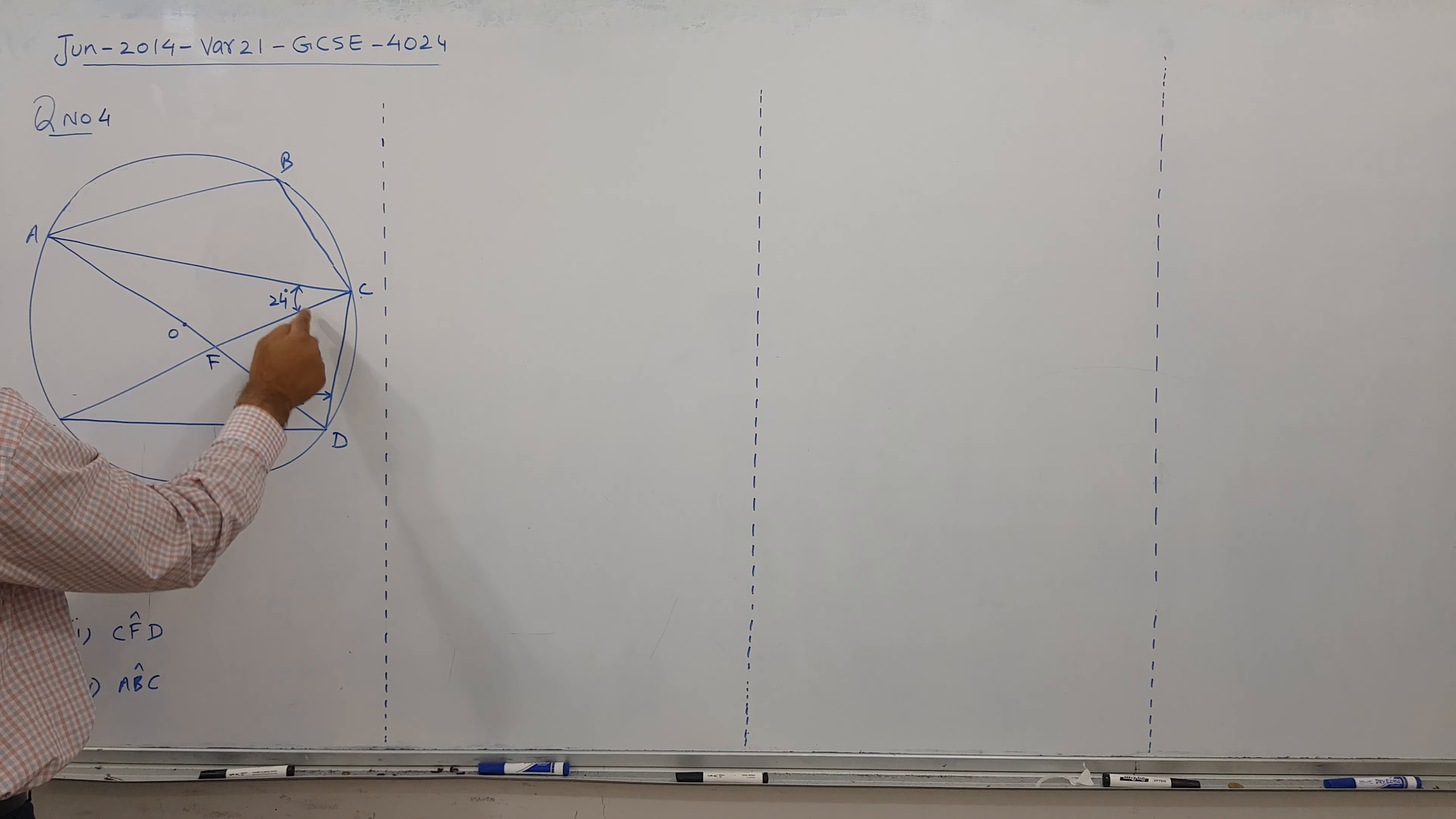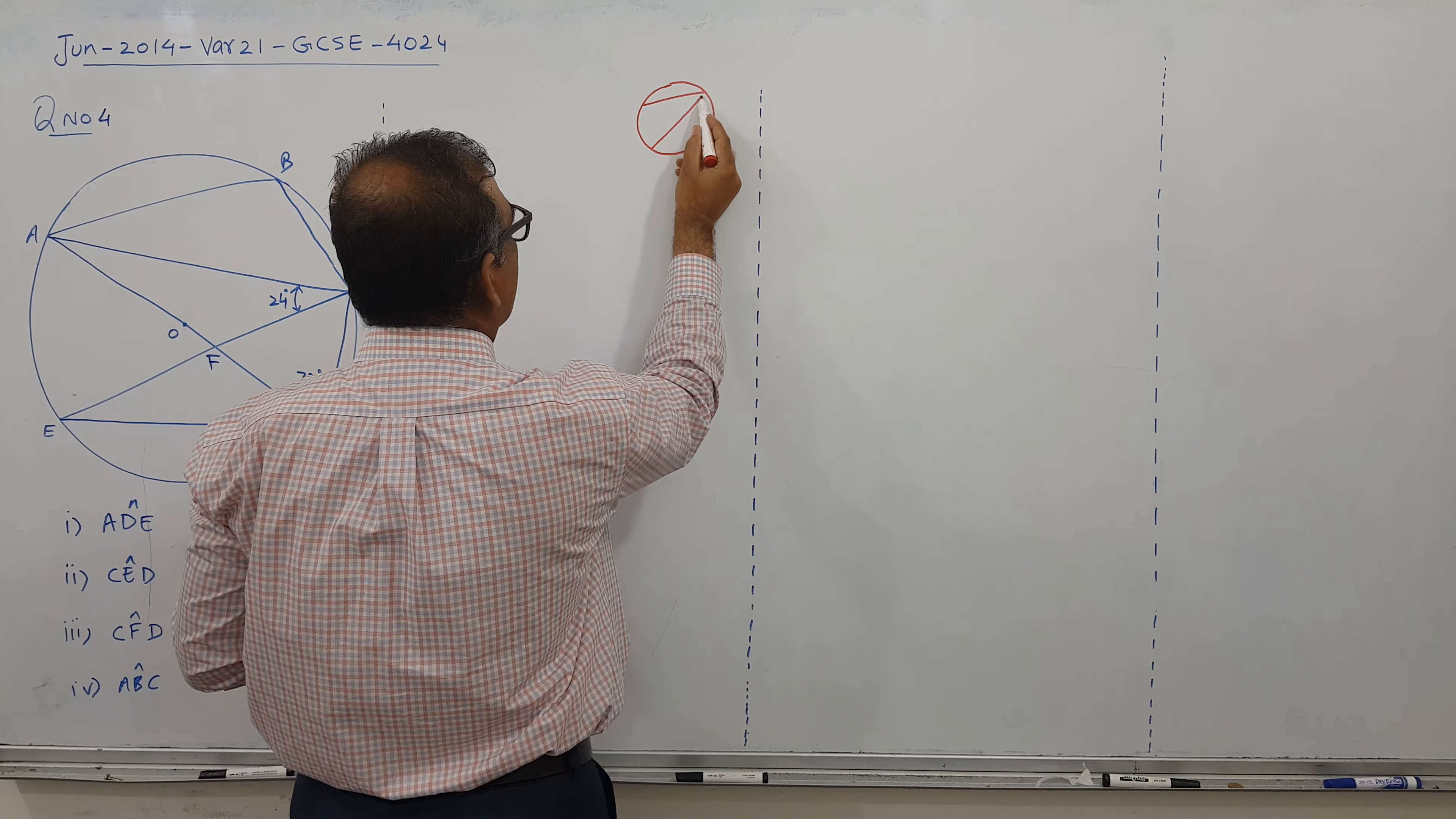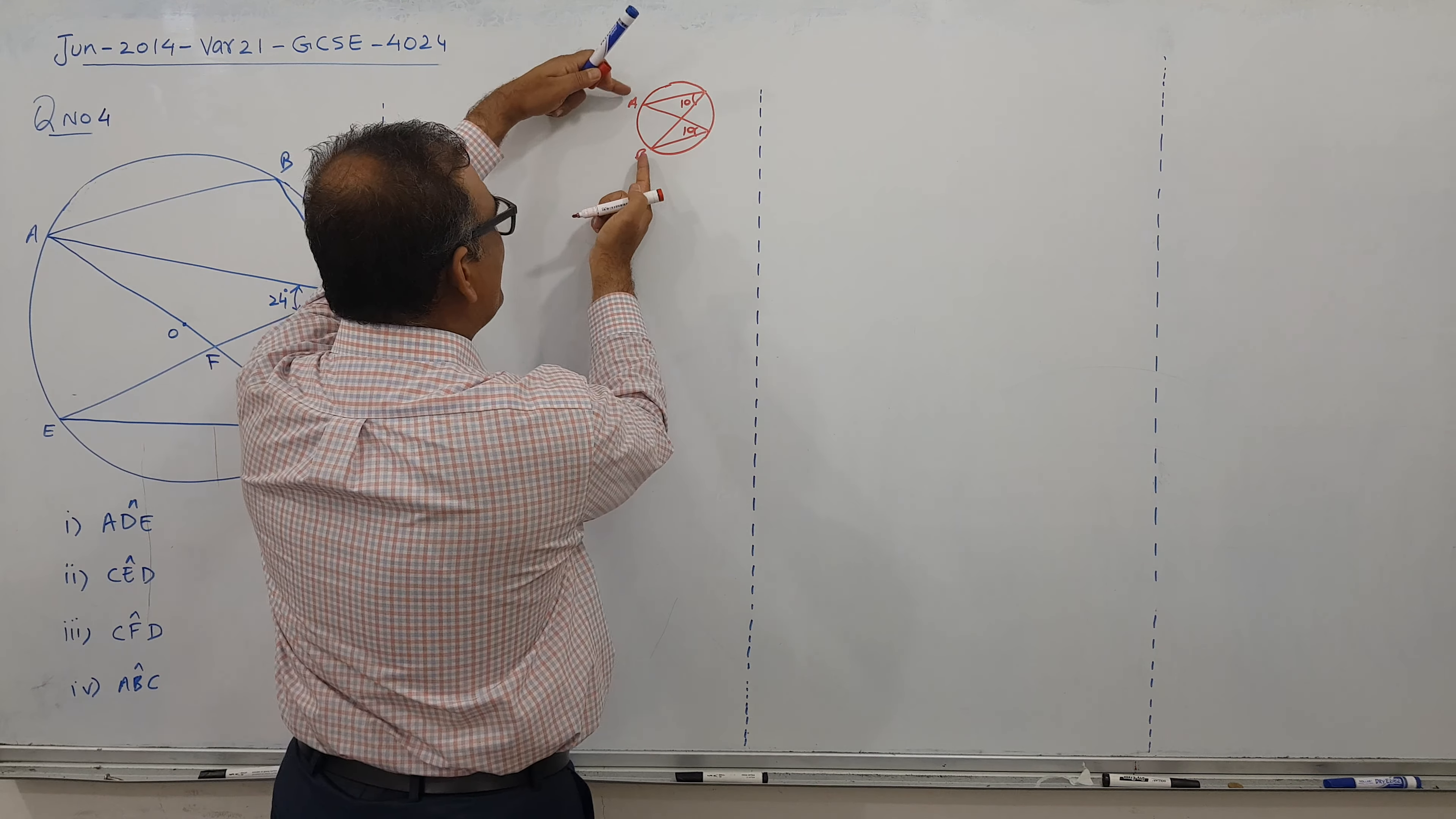I'm looking for angle ADE. The property is: if we go from here, meet here, and go from here, meet here, with B fixed, let's say this angle is 10 degrees. These angles are confirmed equal to each other.